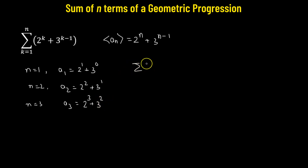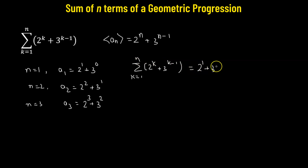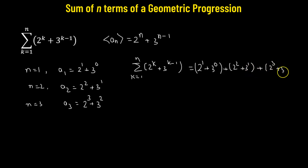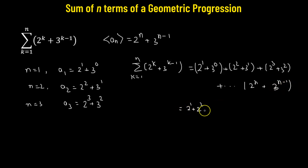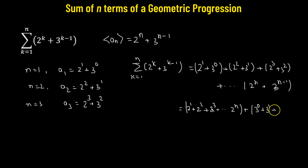For the sum, we consider the summation of 2 raised to the power of k plus 3 raised to the power of k minus 1, where k goes from 1 to n. This equals the first term 2 to the power of 1 plus 3 to the power of 0, added to 2 squared plus 3 to the power of 1, then 2 cubed plus 3 to the power of 2, all the way up to 2 to the power of n plus 3 to the power of n minus 1. We separate this into the series 2 plus 2 squared plus 2 cubed up to 2 to the power of n, and 3 to the power of 0 plus 3 to the power of 1 going up to 3 to the power of n minus 1.